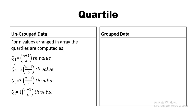As you can see in the formula, when we find Q1 we put i=1, giving 1×(n+1)/4; when i=2, it's 2×(n+1)/4; when i=3, it's 3×(n+1)/4. These are all 'th values', meaning you first find the position, then go back to the data and look up the value. The same process used for calculating the median is followed here — the only difference is the formula.